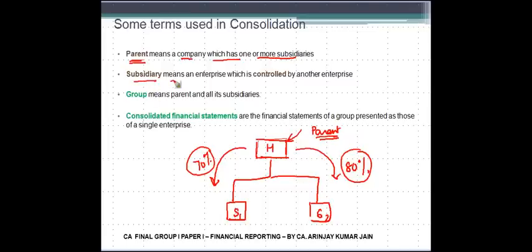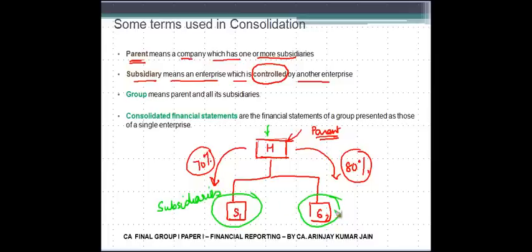Second, subsidiary. Subsidiary means an enterprise which is controlled by another enterprise. So these two companies which are being controlled by H or the Parent Company are known as subsidiaries - subsidiary 1, subsidiary 2. This ownership would amount to control, which we will see when we look at this particular topic.